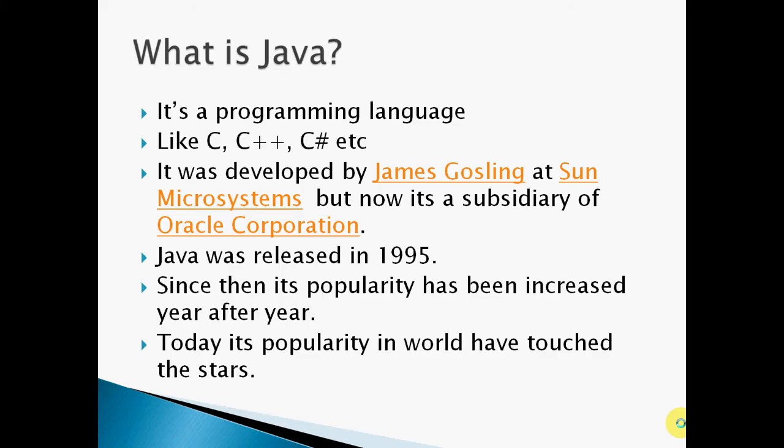Now, what is Java? Java is a programming language very similar to C and C++. It was developed by James Gosling at Sun Microsystems, which is now a subsidiary of Oracle Corporation. Java was released in 1995 and since then its popularity has been increasing day by day.